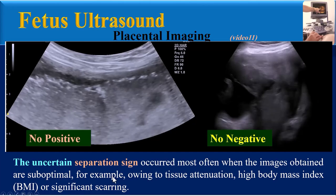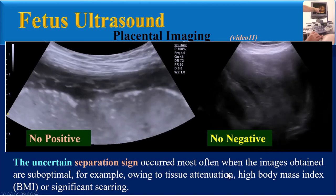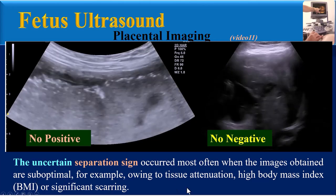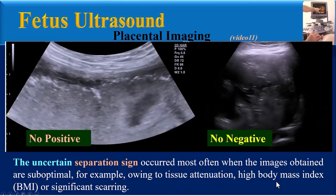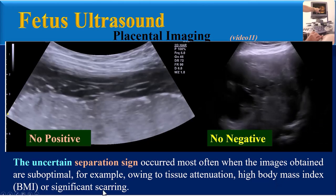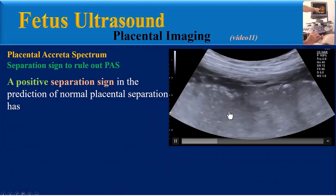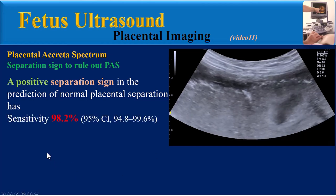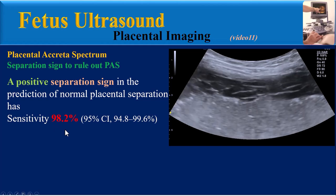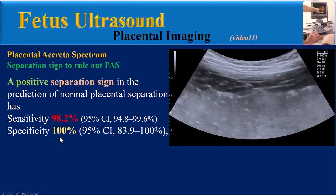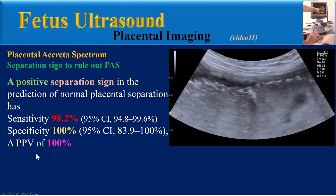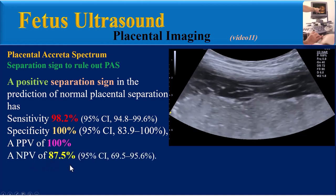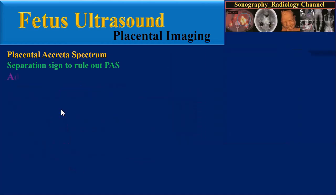Uncertain separation signs occur most often when the images obtained are suboptimal — for example, owing to tissue attenuation, high body mass index, or significant scarring. A positive separation sign in the prediction of normal placental separation has a sensitivity of approximately 98%, a specificity of approximately 100%, a positive predictive value of 100%, and a negative predictive value of approximately 87%.